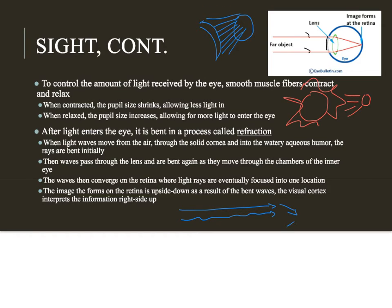The light rays bend as they hit the solid cornea. They bend again when they move from the cornea past the pupil — which is the opening — into the watery aqueous humor inside the eyeball. They bend again moving through that different medium. Finally, they hit the lens, which is also solid, so they are bent a third time.